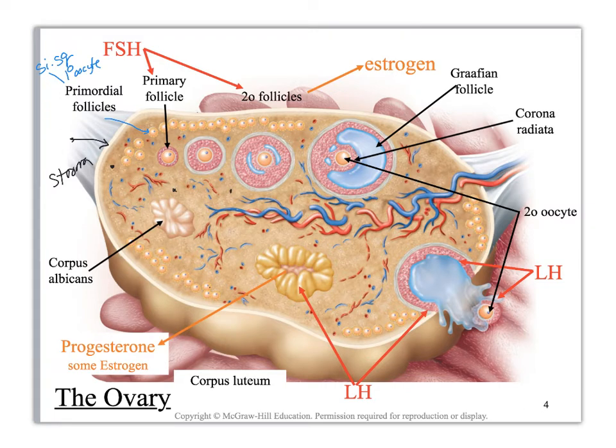All of these primordial follicles were created in the fetus. So if you are female, you are born with all your primordial follicles with all their primary oocytes done, completed. You don't make any more.